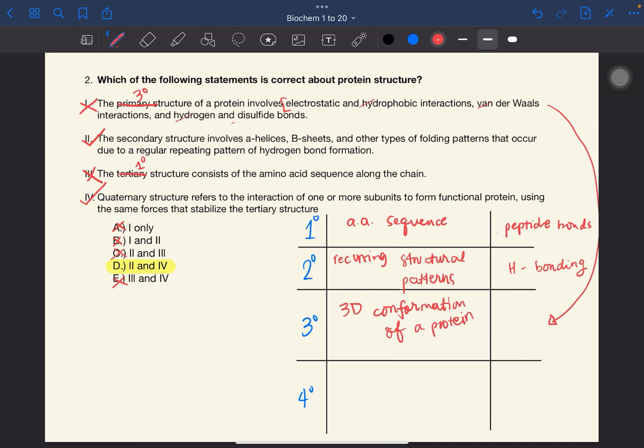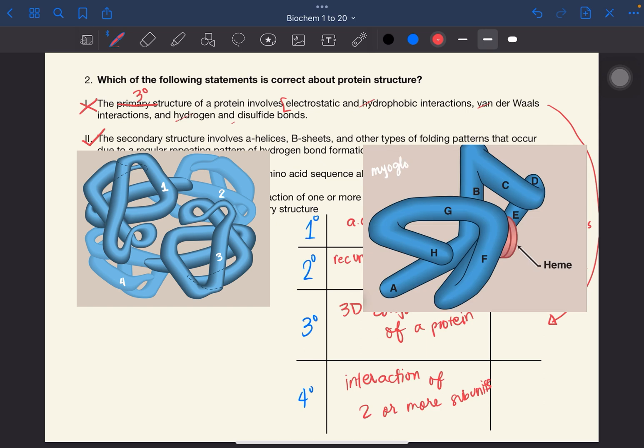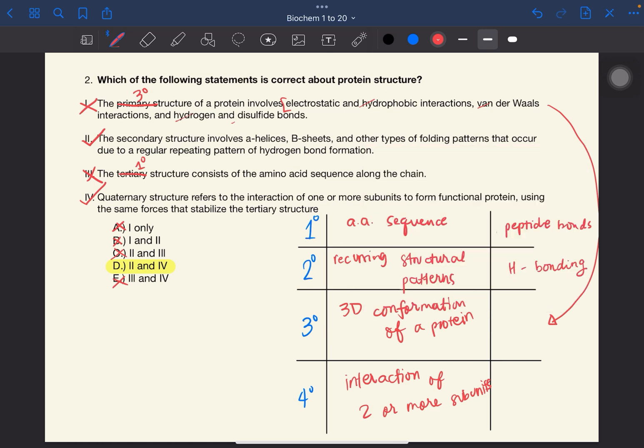And for the quaternary structure, this refers to the interaction of two or more subunits. So take note that not all proteins have quaternary structure. A prime example would be hemoglobin. Hemoglobin has four subunits. And if you compare that with myoglobin, myoglobin has only one subunit. So wala siyang quaternary structure. And the bonds present in the quaternary structure are similar to those in the tertiary structure.